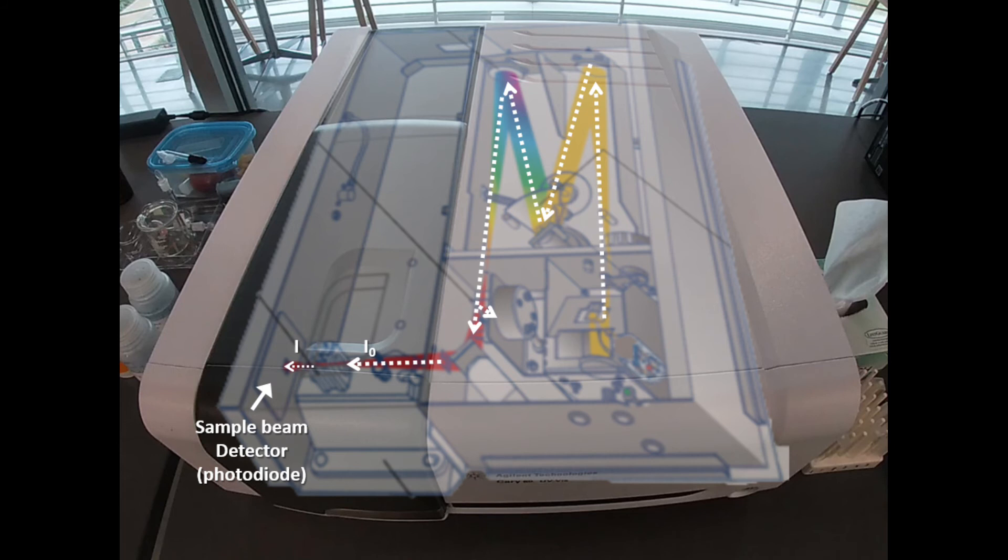The incident beam is then directed toward the sample, and the radiation not absorbed is transmitted through the sample to the detector. This allows us to calculate absorbance, which according to Beer's law is proportional to concentration and is key to quantitative analysis using UV-Vis spectrophotometry.